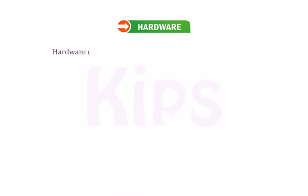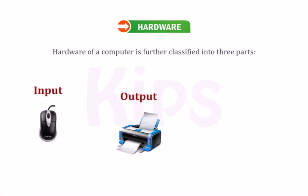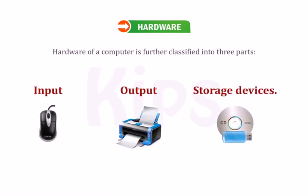Hardware of a computer is further classified into three parts: input, output, and storage devices. Let us talk about each of these in detail.